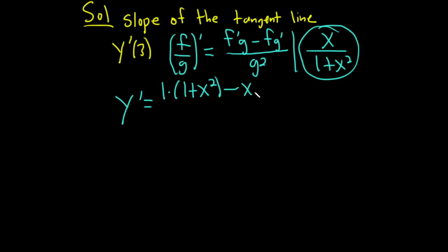Minus the top times the derivative of the bottom. The derivative of 1 is 0, the derivative of x² is 2x. It's all being divided by the bottom one squared, so (1 + x²)². Again, it's the derivative of the top times the bottom minus the top times the derivative of the bottom, which is just 2x, over the bottom one squared.